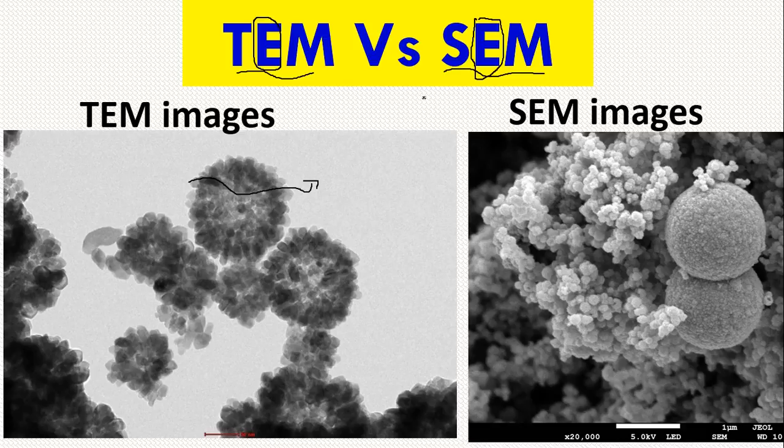Previously, when we did not have these tools, we used light microscopes — the same work was done by light. Here, the same work is done by electrons.